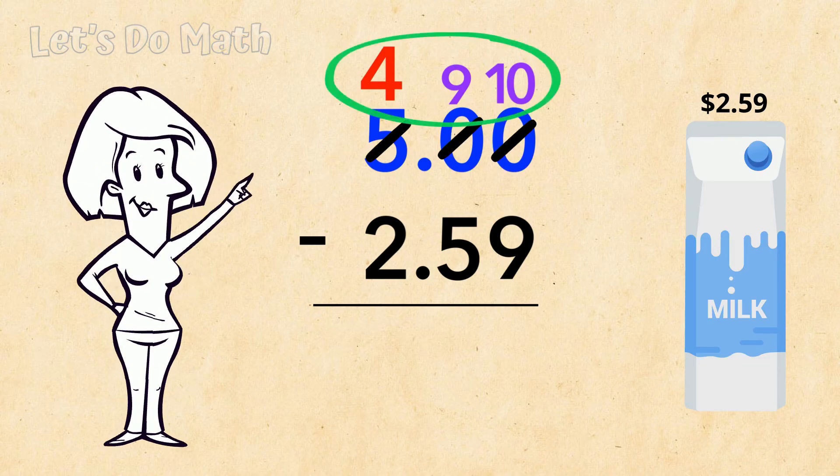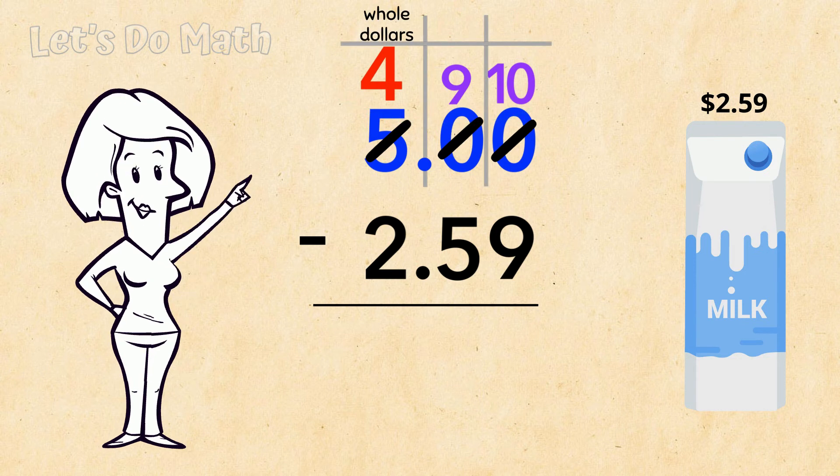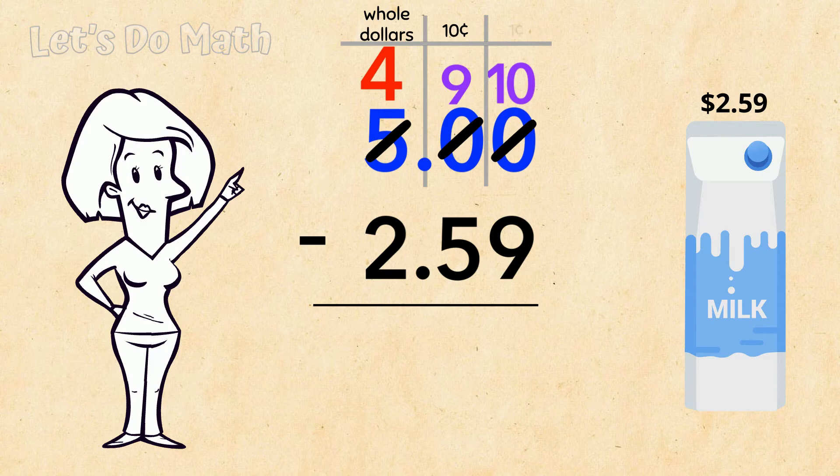What I've done here is to regroup the value of that $5. In the whole dollars column I now have 4. In the 10 cents column here I've got 9, so that means 90 cents, and in the 1's cents column I've got 10.